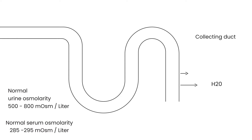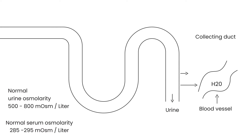These numbers are important because they help us decide how dilute or concentrated something is. For example, a normal person might have a serum osmolarity of 290 and a urine osmolarity of 600. If a lot of ADH is released, a lot of water comes back into the bloodstream, making the serum more dilute — the number goes down, say to 280. And if the serum becomes more dilute, the urine becomes more concentrated — the number goes up, say to 700.